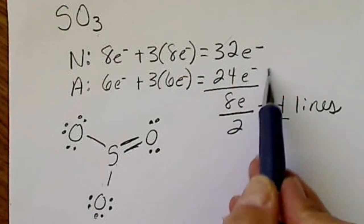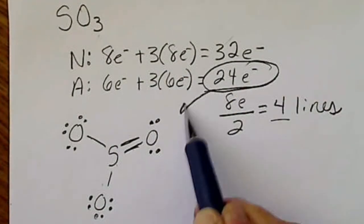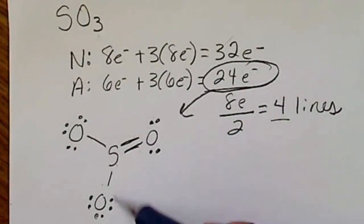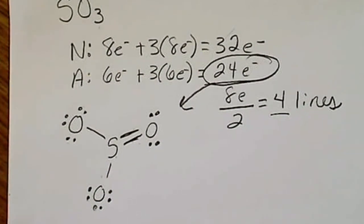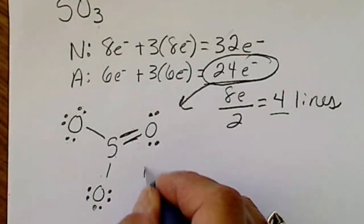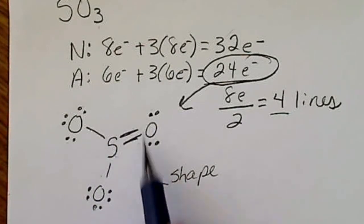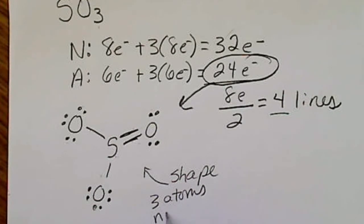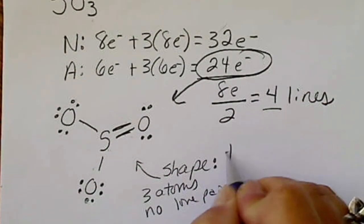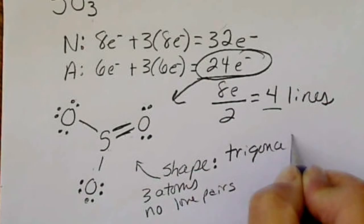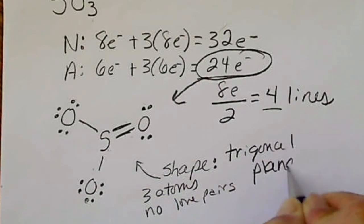Counting all electrons on the picture gives 24. The central atom, sulfur, has three atoms around it with no lone pairs, which is the perfect triangle arrangement. We call this shape trigonal planar.